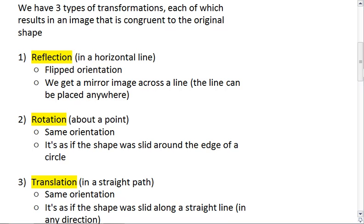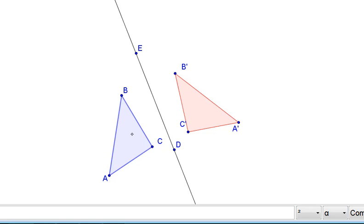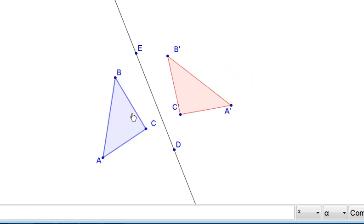OK. The next one is a rotation, and it's a rotation about a point. Now notice with reflection, we get the mirror image, we get the flipped image of the triangle.